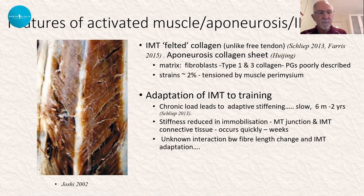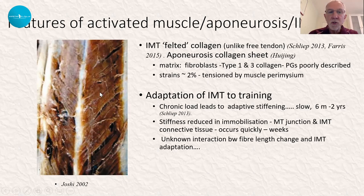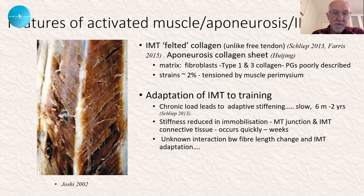This adaptive stiffening is somewhat reversible too — if we unload an intramuscular aponeurosis or tendon for a period of weeks to months, we see a loss of stiffness. So it is trainable both ways. We also see from the work of Ryan Timmons and others that there appears to be some change in fascicle length with eccentric exercise, but we don't know whether this induces a change in stiffness properties as fascicle length increases — one of a series of unknowns in our understanding of intramuscular tendon.